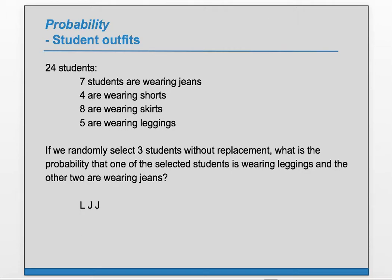We could also have the first person wear jeans, the next leggings, and the next jeans — J, L, J — or we could have the first two with jeans and the next with leggings — J, J, L. These are the three ways to satisfy this statement, and they're not overlapping.